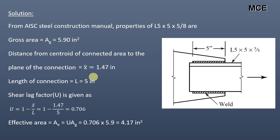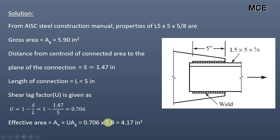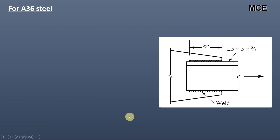The effective area is given as the shear lag factor times the gross area, which equals 0.706 times 5.9, which equals 4.17 in². The properties of A36 steel are: yield strength equals 36 ksi.